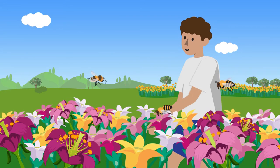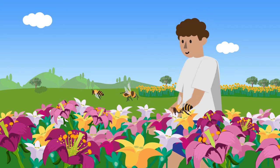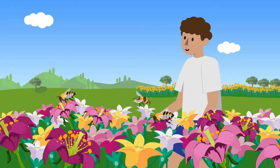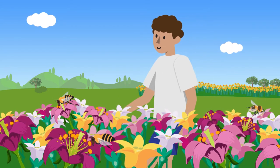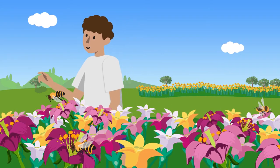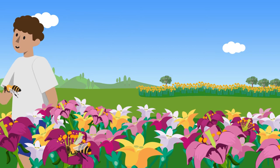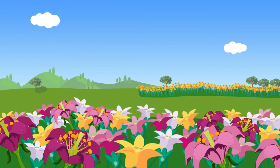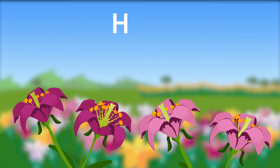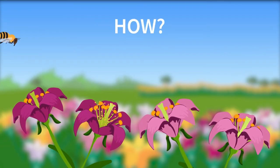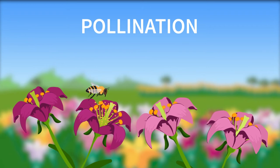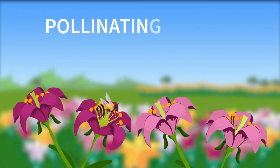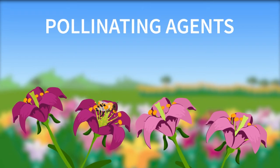We often try to shoo insects away from flowers. We shouldn't do that because insects are essential for the reproduction of flowering plants. They help in pollination — we call them pollinating agents.